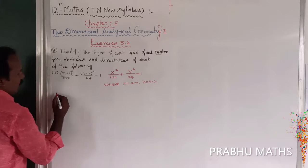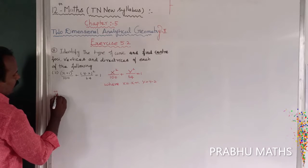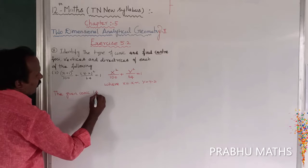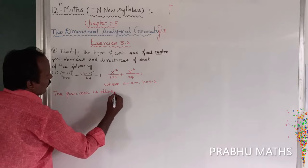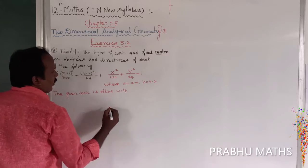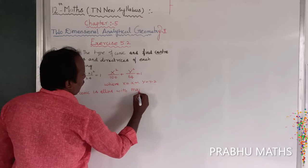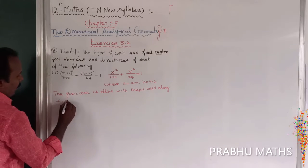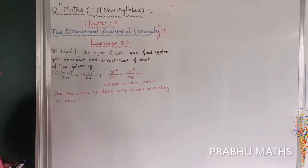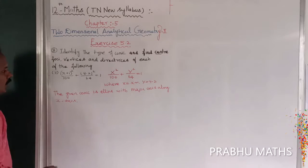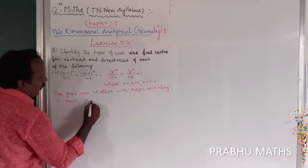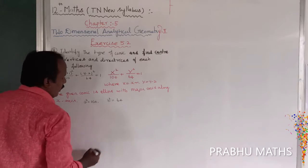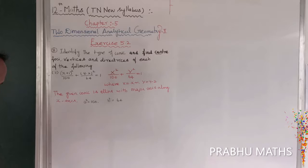So the given conic is an ellipse. The given conic is an ellipse with major axis along the x-axis. a² is equal to 100, b² is equal to 64.